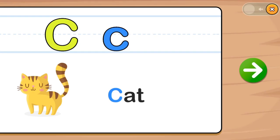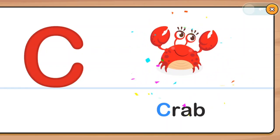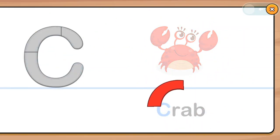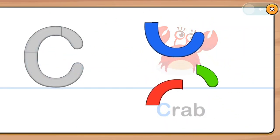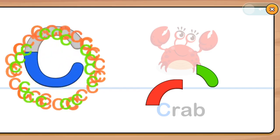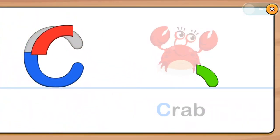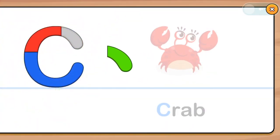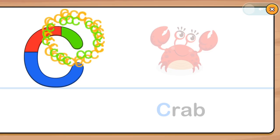C is for cat. C is for crab. C for crab. C is for crab. Well done. Well done. Nice.